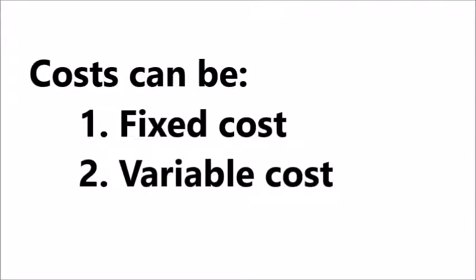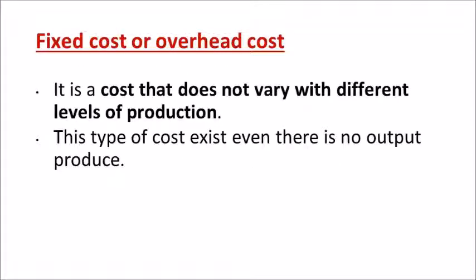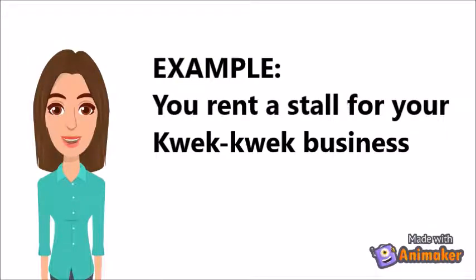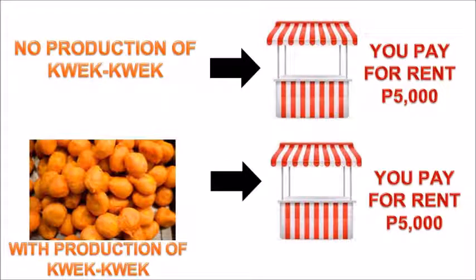Costs can be fixed or variable. A fixed cost, or overhead cost, is a cost that does not vary with different levels of production. This type of cost exists even when there is no output produced. Regardless of how many units a business produces, fixed costs remain the same. For example, you rent a stall for your quick-quick business inside the mall — whether you produce a lot or not, you still pay the same rent amount.